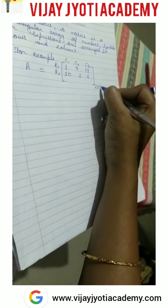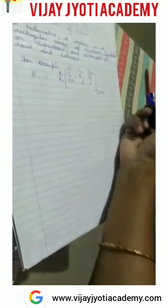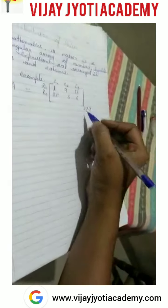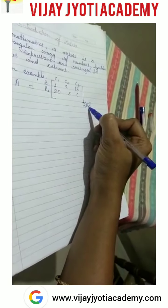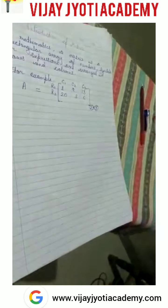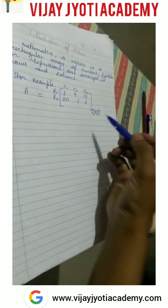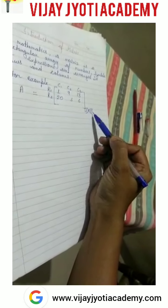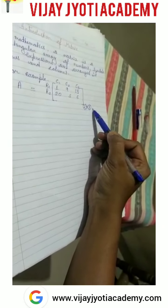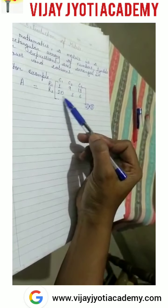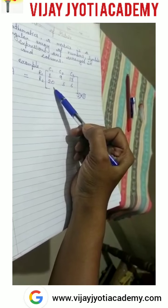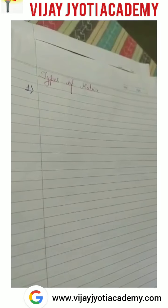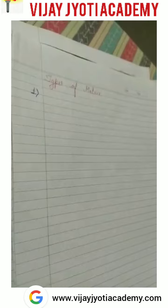And 2 by 3 is the dimension of the matrix. Here 2 shows the number of rows and 3 shows the number of columns. 2 into 3 equals 6, so the total number of elements this matrix has is 6. Now, types of matrix.